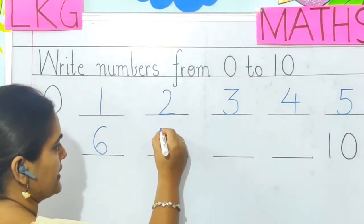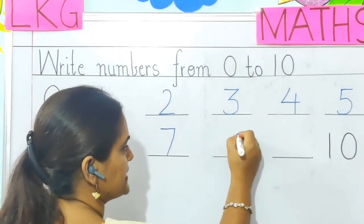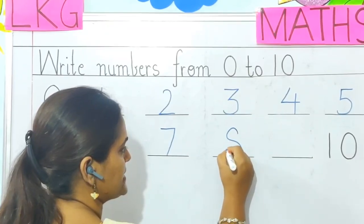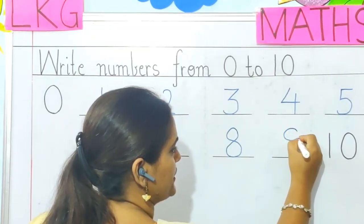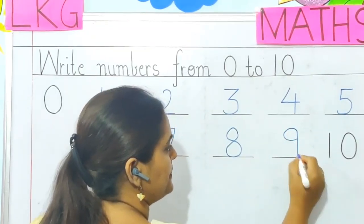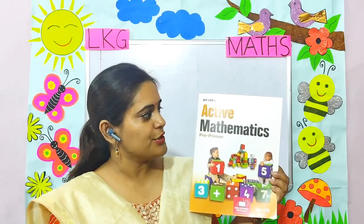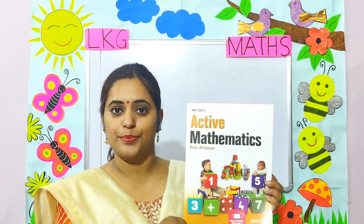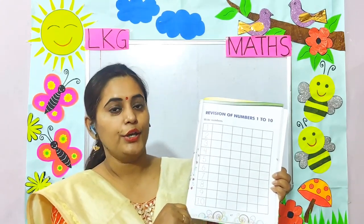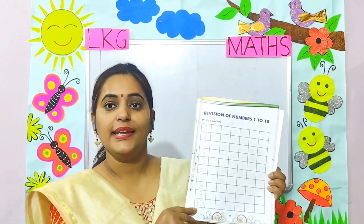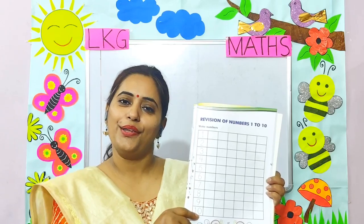After 5, children, it will be 6. So we will write 6 next. After 6, 7. Write 7. Next number 8, so we will write 8 here. After 8, 9. So we will write 9. The next number 10 is written over here. Children, take out your active mathematics book and turn to page number 47. Write 1 to 10 neatly and correctly as I have shown you on the board.